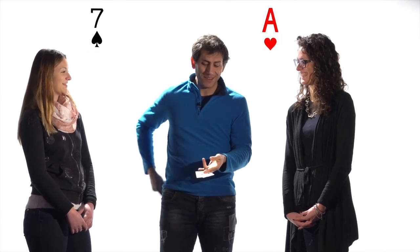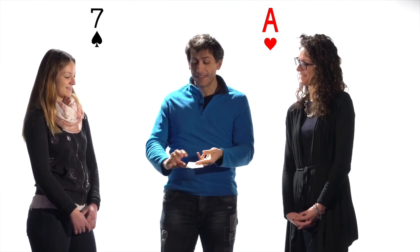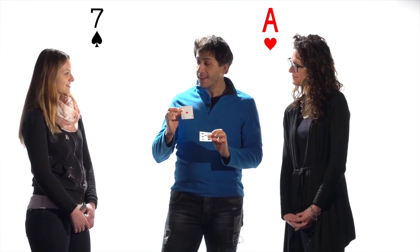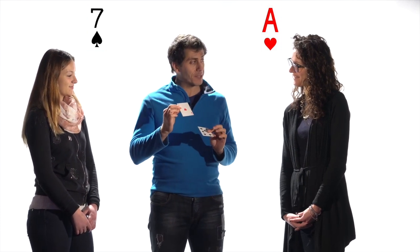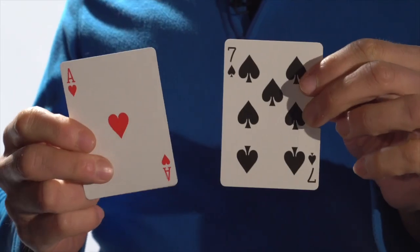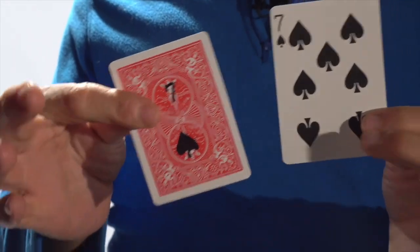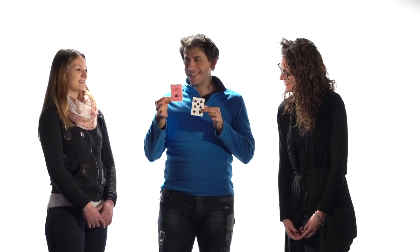That's pretty strange, isn't it? But I already knew that you would choose the Seven of Spades and you would think of the Ace of Hearts. Because here I have the Seven of Spades. And behind the thought of cards there is exactly the Seven of Spades. Amazing.